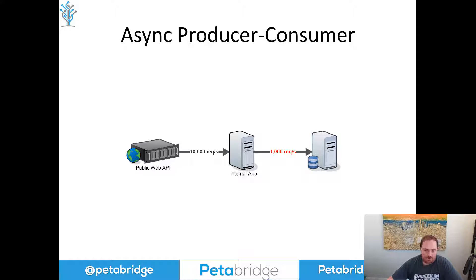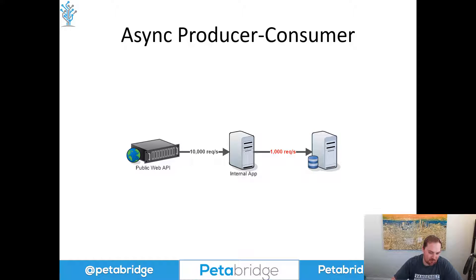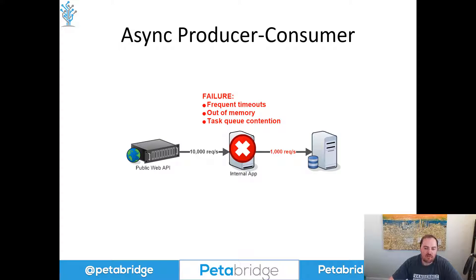Due to the way those queries are designed — maybe they're complex and touch a lot of tables, maybe they perform some scans, maybe they use synthetic tables — let's say those queries can perform, on the hardware this particular company is using, a theoretical maxima of 1,000 requests per second. This is going to result in the system tipping over and failing. You're going to see very high contention on the task queue, or in the case of a relational database, table lock contention. You might see memory utilization run away, or frequent timeouts occur.